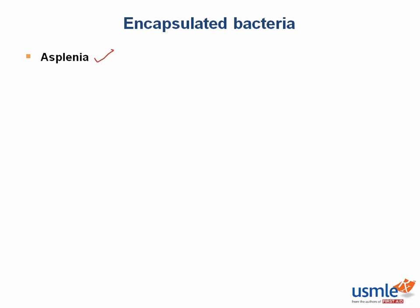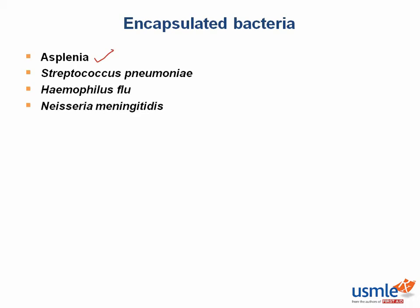The most important encapsulated bacteria are Strep pneumoniae, Haemophilus influenzae, and Neisseria meningitidis. Vaccines against these bacteria use the capsule as an antigen.